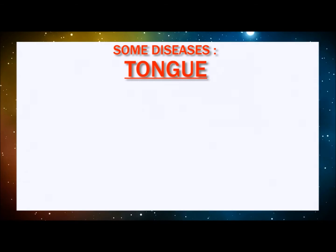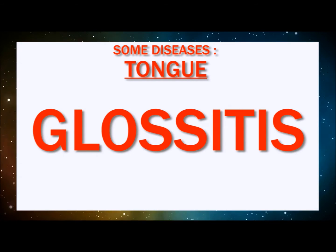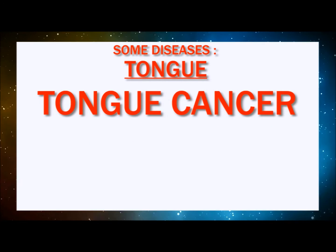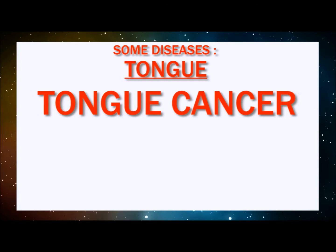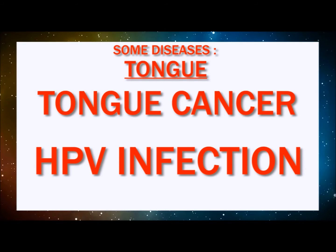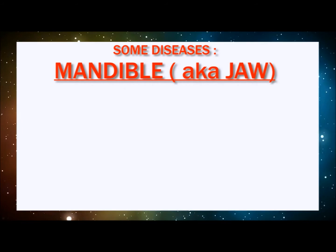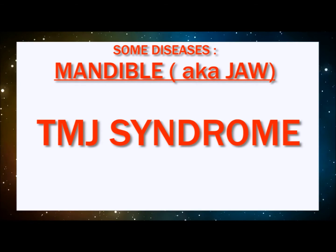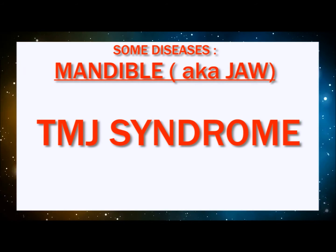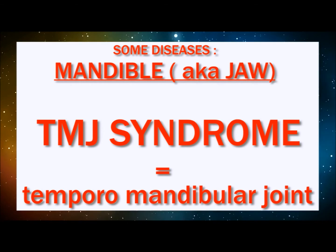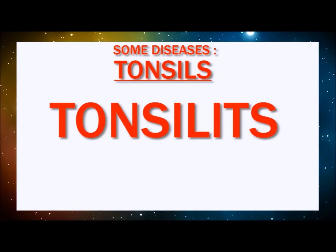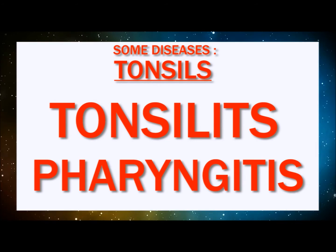Then we have diseases of the tongue. Glossitis is the inflammation of the tongue — when inflamed, it gets red, tender, and has a smooth appearance. We also have tongue cancer; this is what guitarist Eddie Van Halen had. Smoking is bad and can cause tongue cancer, and HPV infection has also been linked to it. Then we have a disease of the mandible, also known as the jaw, known as TMJ syndrome — there is pain and cracking at the mandibular joint. TMJ stands for temporal mandibular joint. Then we have tonsillitis, the inflammation of the tonsils, usually accompanied by pharyngitis, which causes a sore throat.